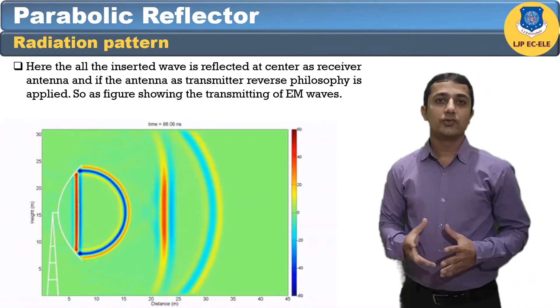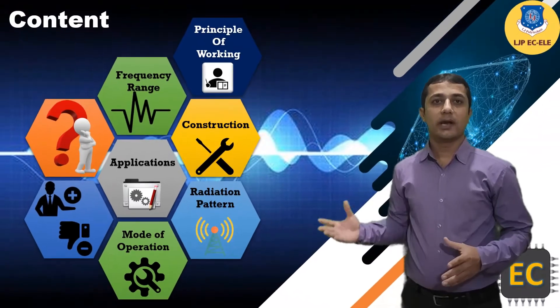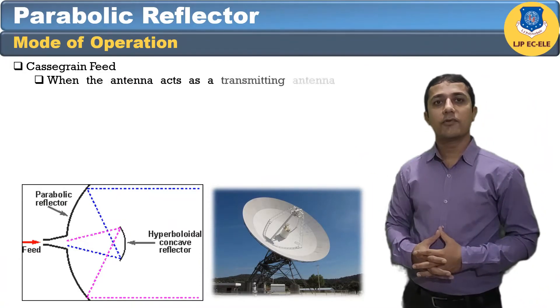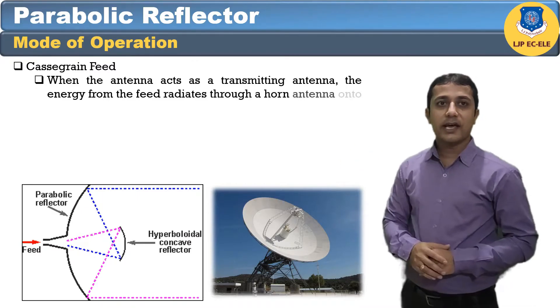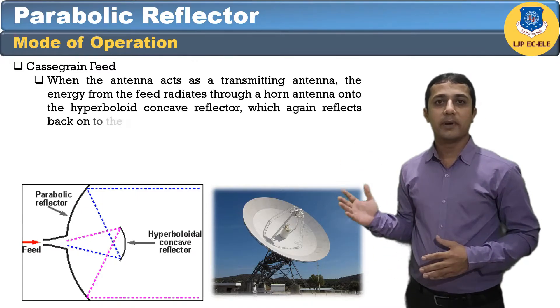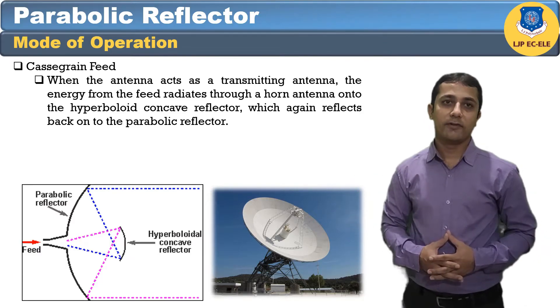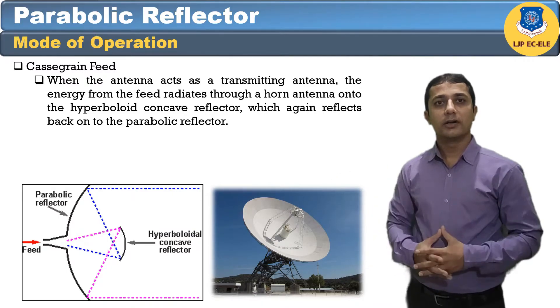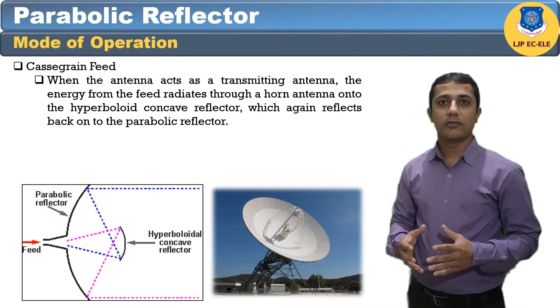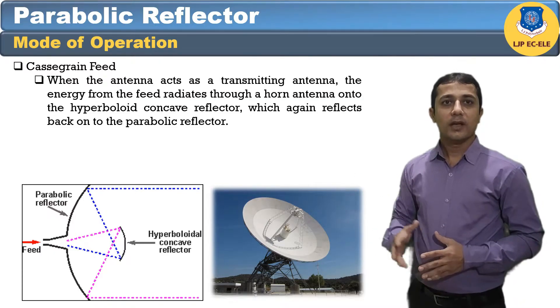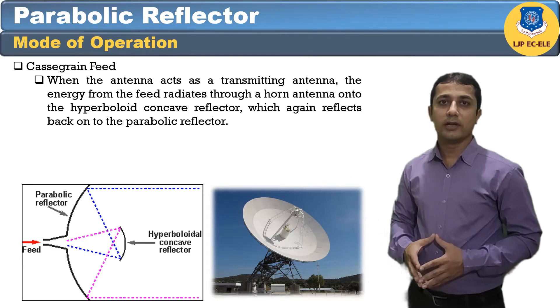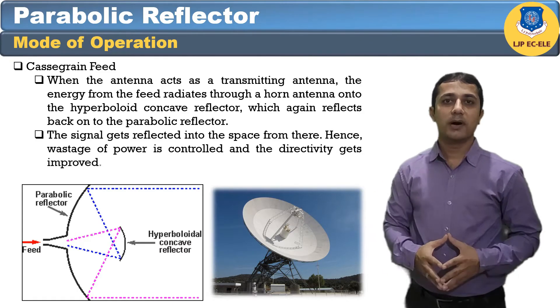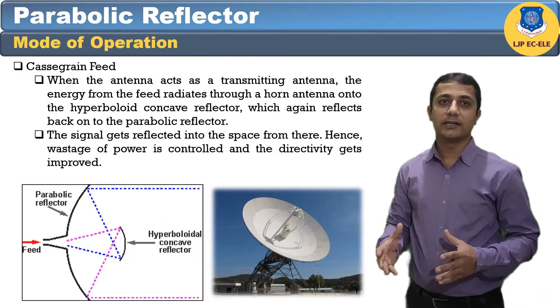Basically it is working in two modes as per the feed line given to parabolic reflector antenna. First is Cassegrain feed. Cassegrain feed is another type of feed given to the reflector antenna. In this type, the feed is located at the vertex of the paraboloidal, unlike in the parabolic reflector. When the antenna acts as a transmitter antenna, the energy from the feed radiates through a horn onto the hyperboloid concave reflector, which again reflects back onto the parabolic reflector. The signal gets reflected into space from there. Hence the wastage of power is controlled and the directivity gets improved.